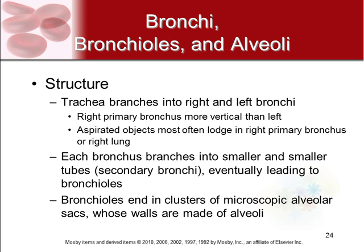Further down, your trachea branches into right and left bronchi. Your right is the primary bronchus because it's more vertical and a bit larger, so if you aspirate something — breathe it in instead of it going to your stomach — it often gets lodged in the right bronchus. Each bronchus continues to branch into smaller tubes called secondary bronchi, and eventually leads to bronchioles, which are even smaller — much like arteries branch into arterioles. The bronchioles end in clusters of microscopic alveolar sacs whose walls are made of alveoli covered in capillaries, because that's where oxygen and carbon dioxide exchange with your circulatory system happens.